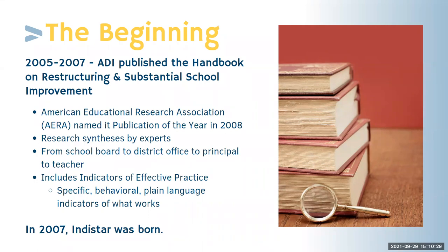One of the first requests from the federal government was to research what successful schools do consistently that makes them successful. We published the Handbook on Restructuring and Substantial School Improvement, which can be found on the Indistar website under free resources. The publication won an ERA award in 2008. It's basically a synthesis of what successful schools do. We came up with effective practices and then broke those down even more granularly into indicators of effective practice — that's what you'll see in the Derago Star system.